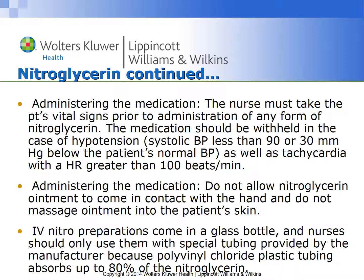For IV nitroglycerin, it is diluted in normal saline or D5W, uses a glass bottle with special tubing, and is titrated within an ordered range based on the patient's response — it should be administered via an IV pump. The patient needs to be monitored on the EKG/ECG with frequent blood pressure checks. Nitroglycerin is ordered by micrograms per minute.